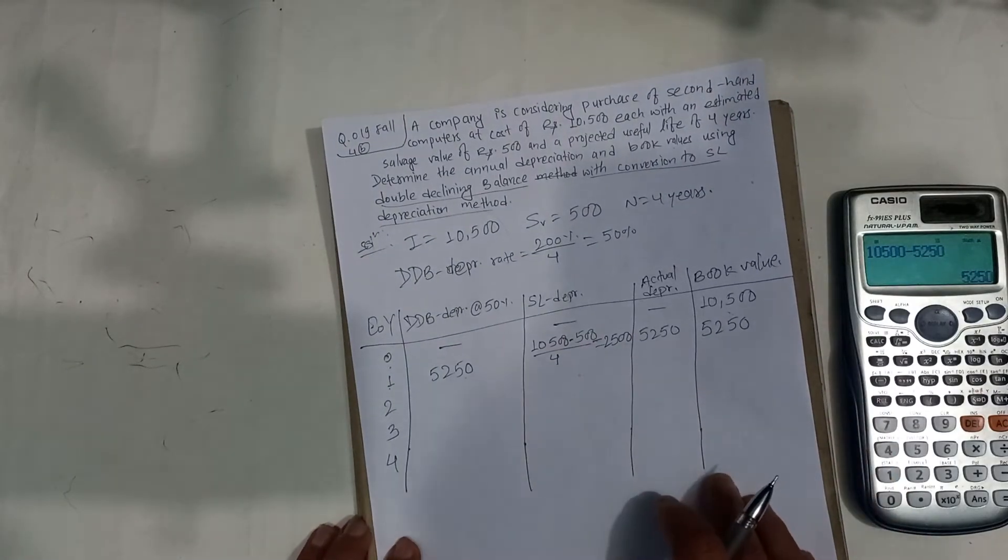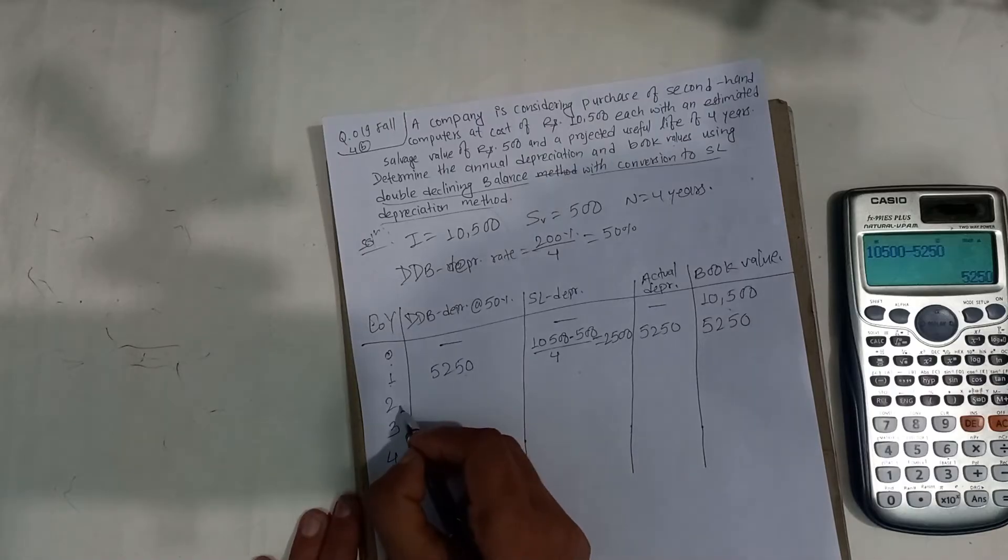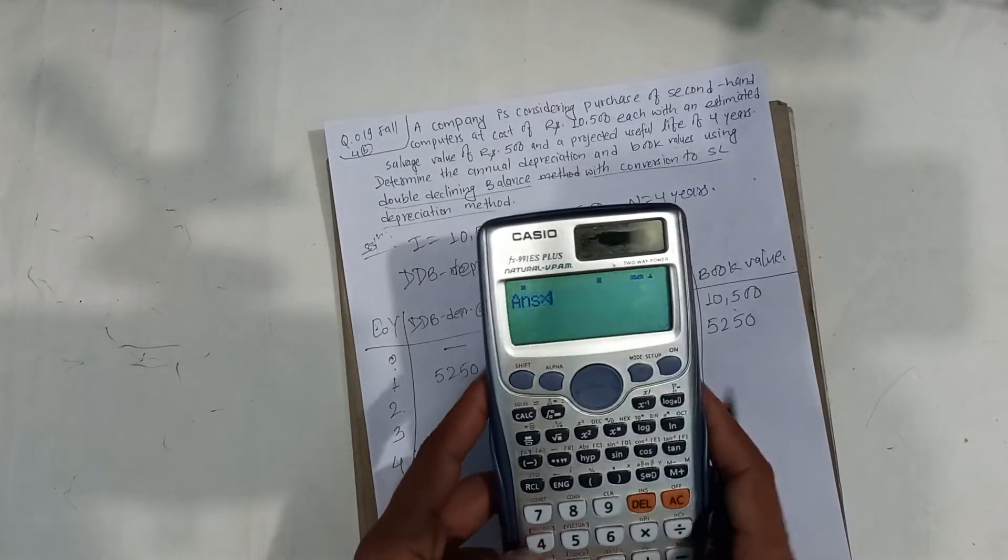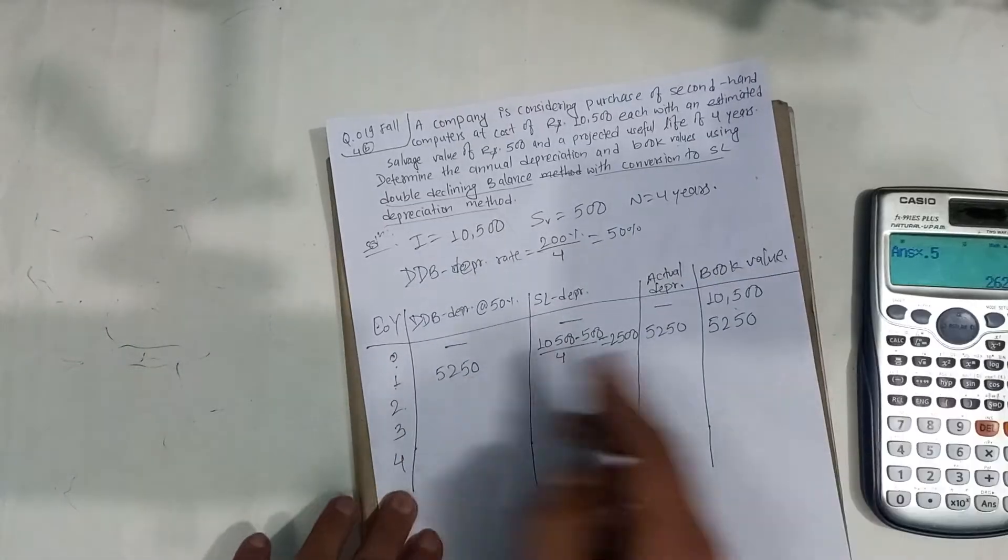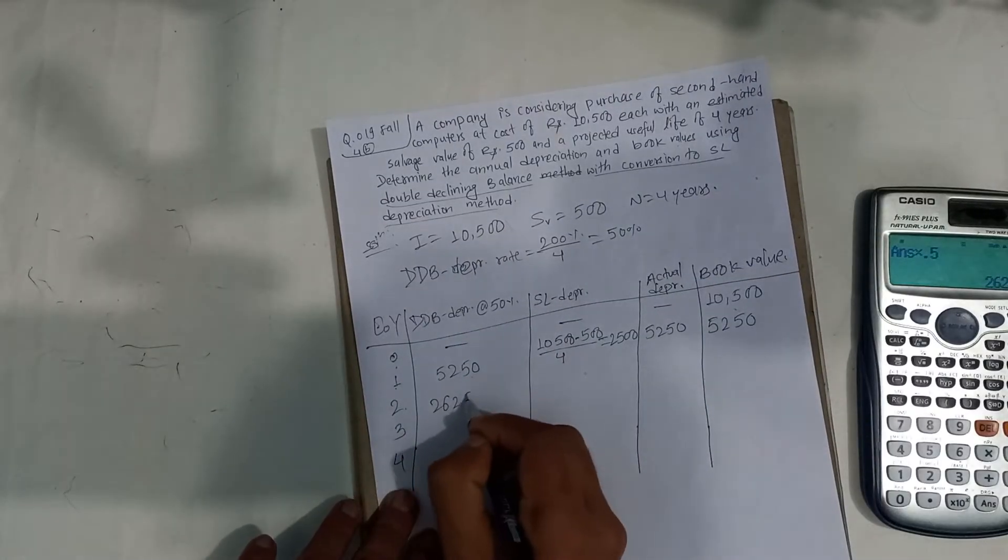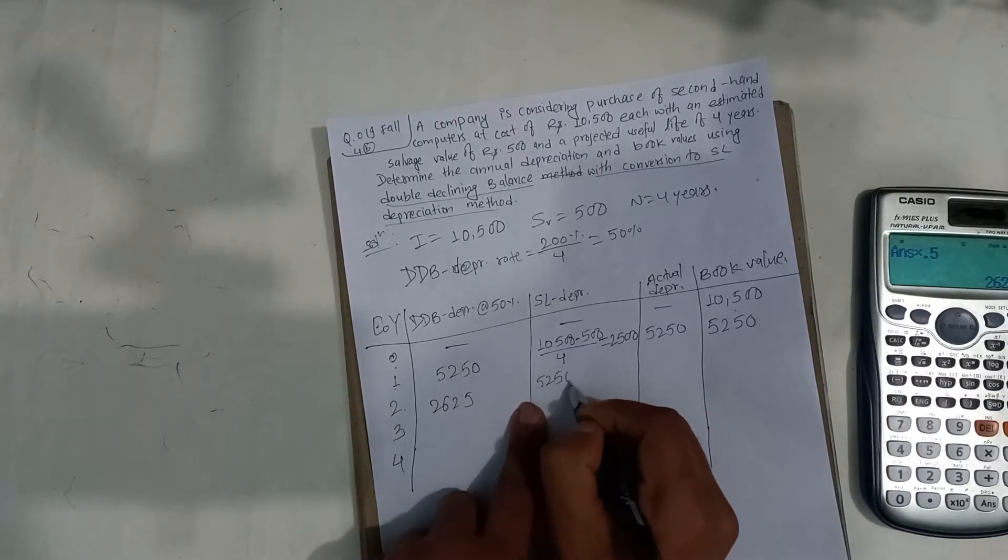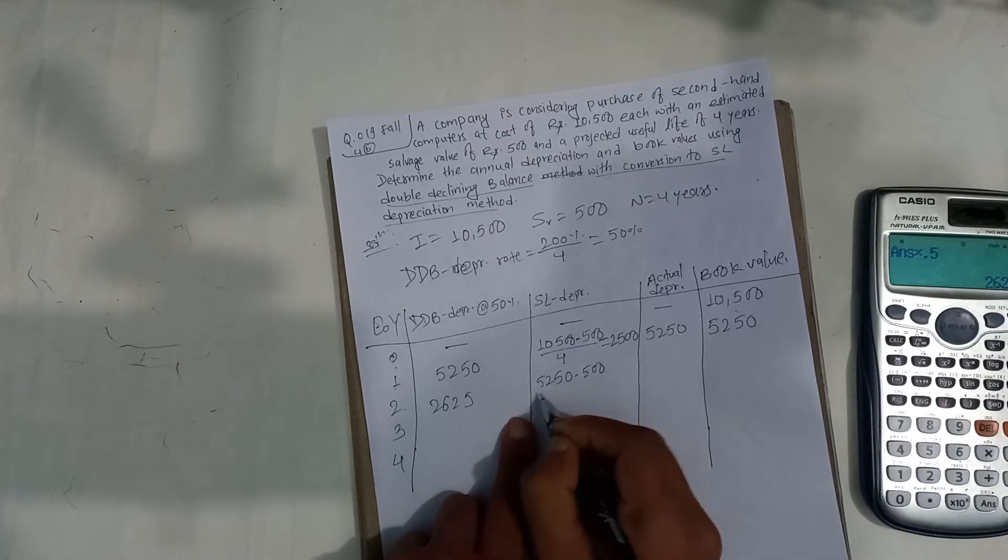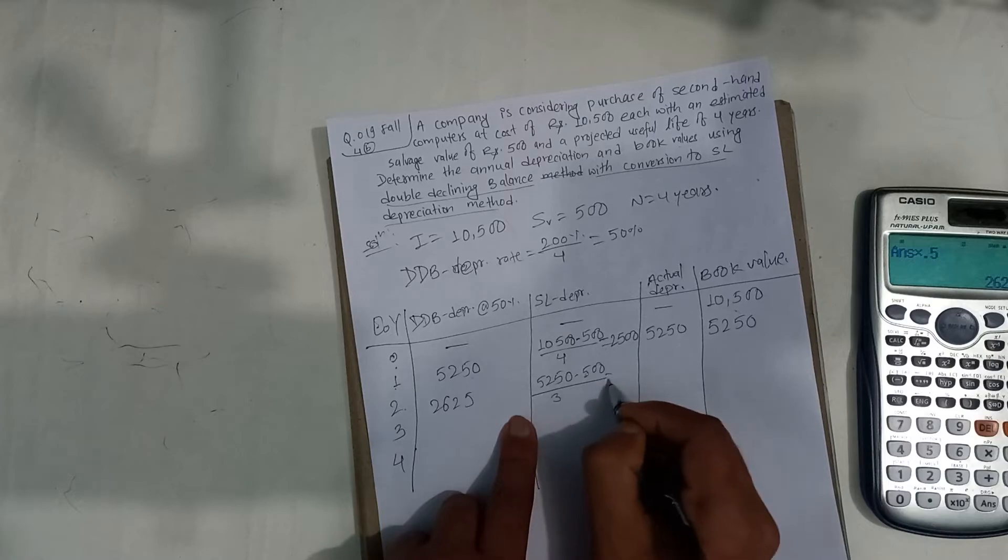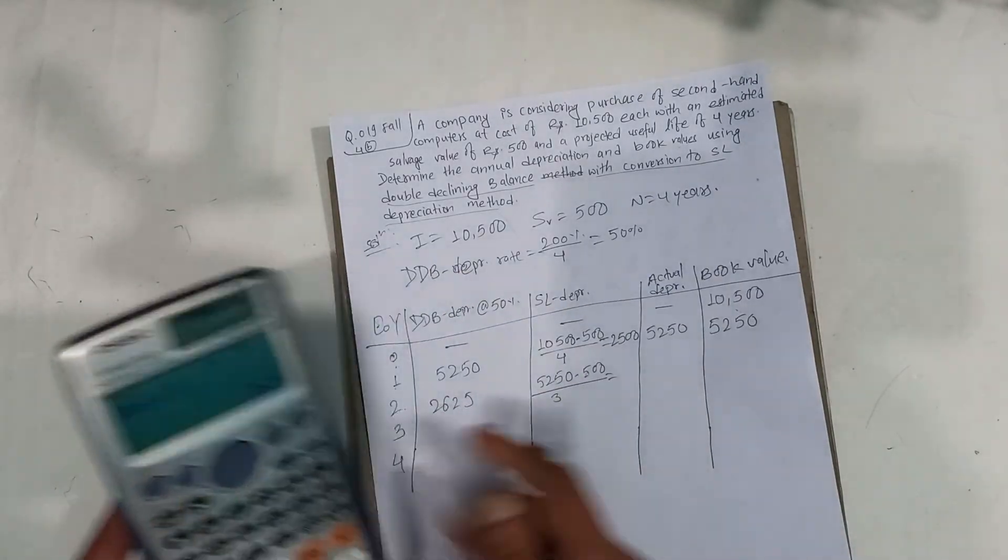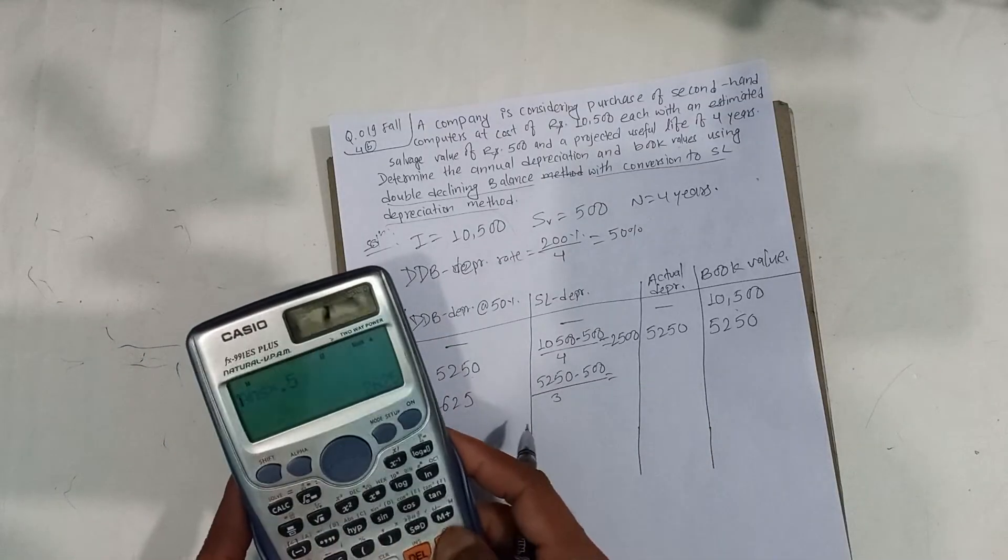Book value becomes 5,250. Now 50% of this, so DDB is 50% which equals 2,625. And SL is 5,250 minus 500 divided by 3.